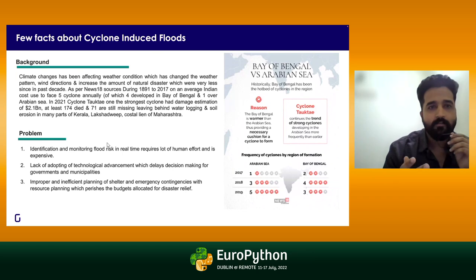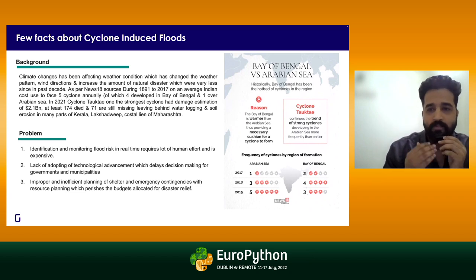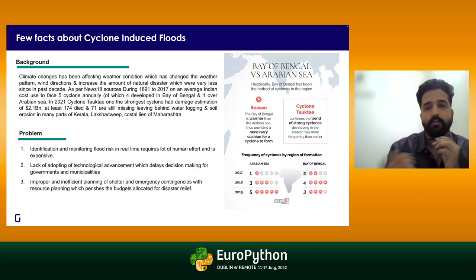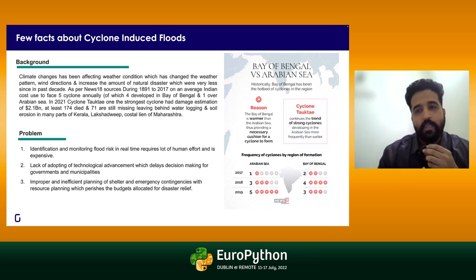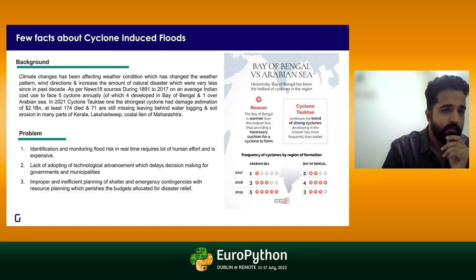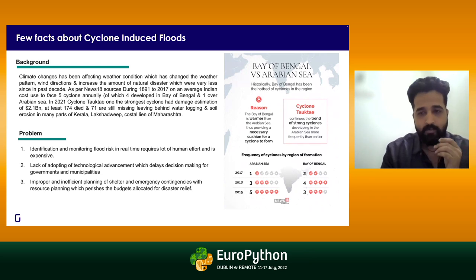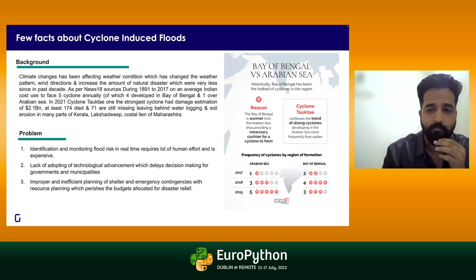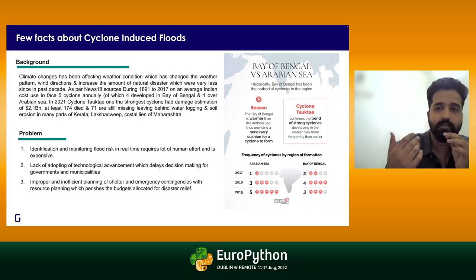Some facts about cyclone-induced floods: there are various parts through which India is exposed to the sea coast, and many other countries face similar problems. Whenever a cyclone hits, it creates cyclone-induced heavy rainfalls, ultimately creating huge floods. The problem is: is there any identification mechanism by which we can know which areas will be flooded so we can do rescue and evacuation operations beforehand, knowing which houses to rescue first?